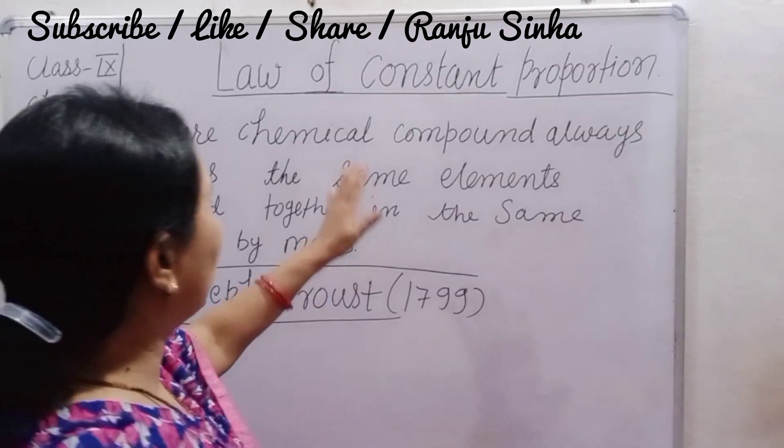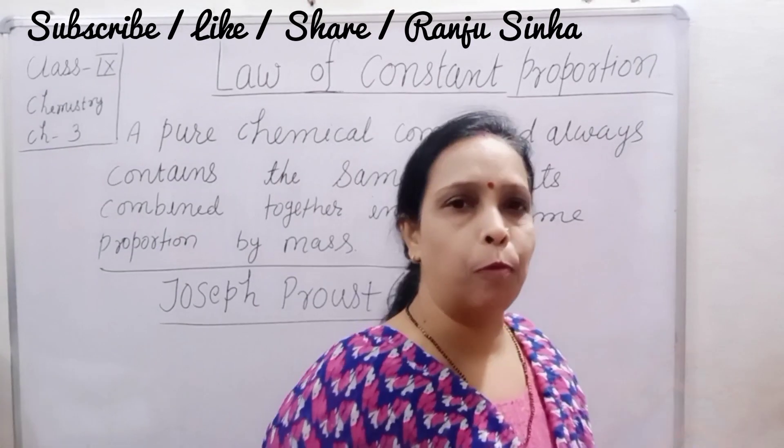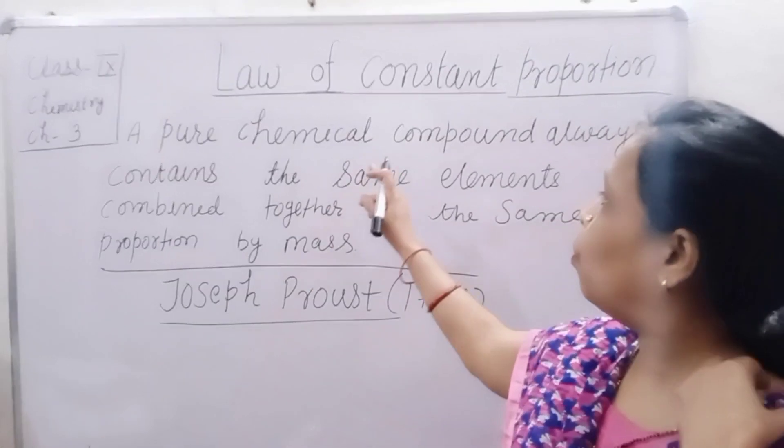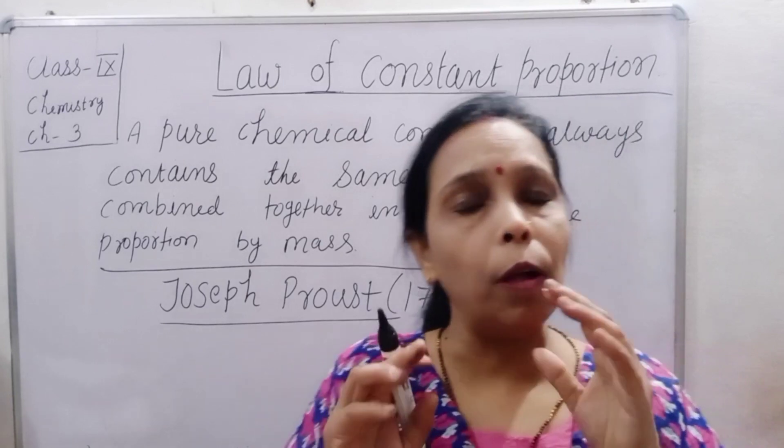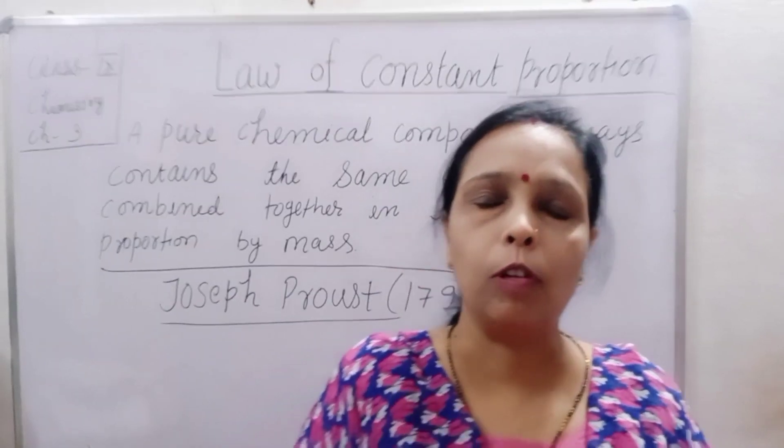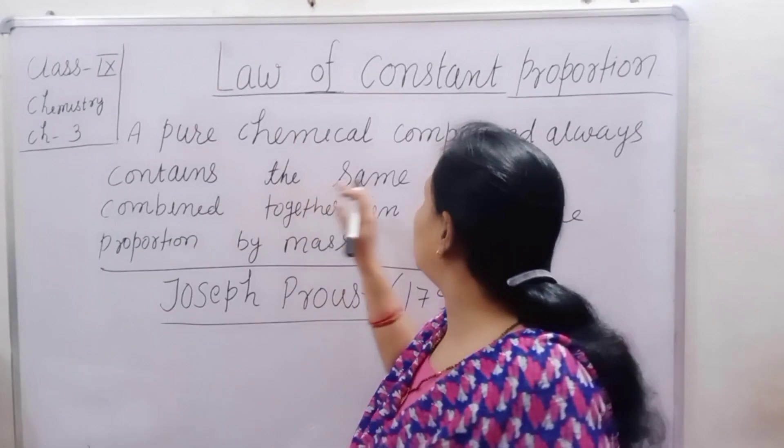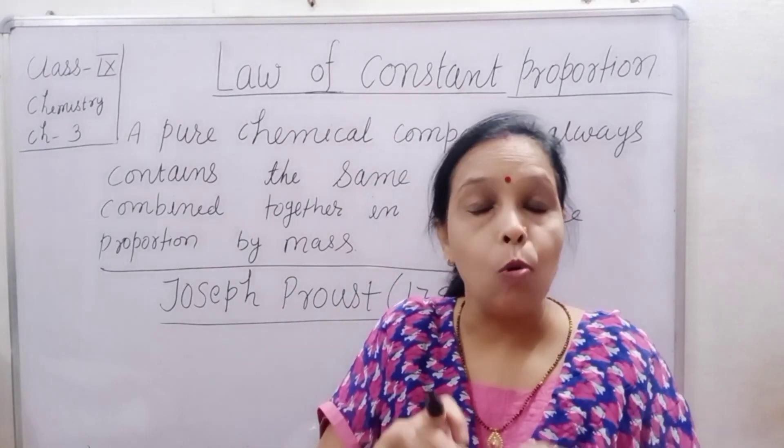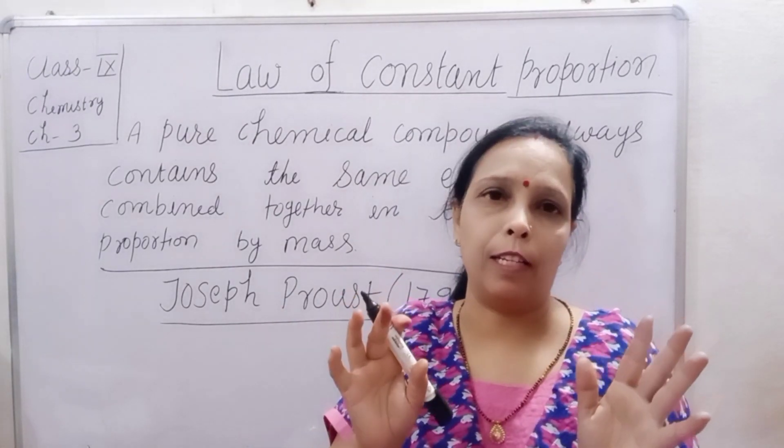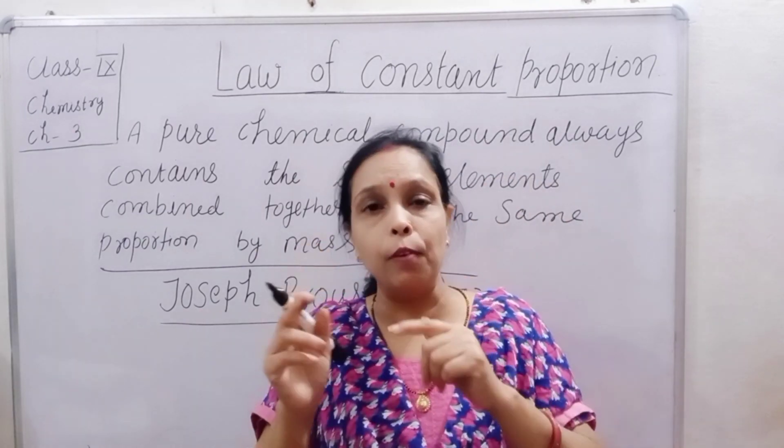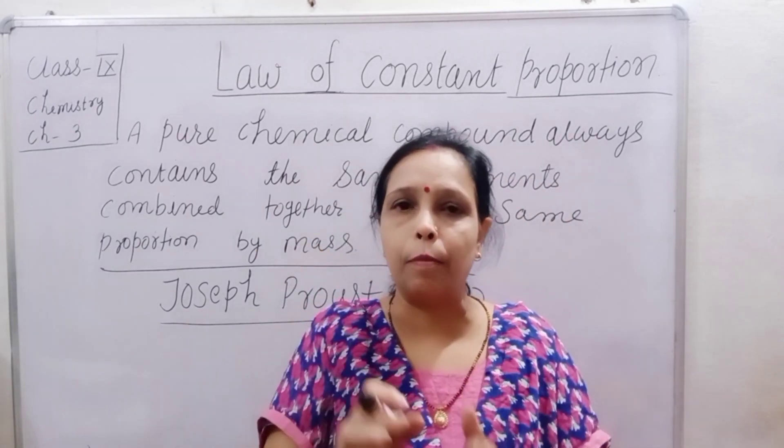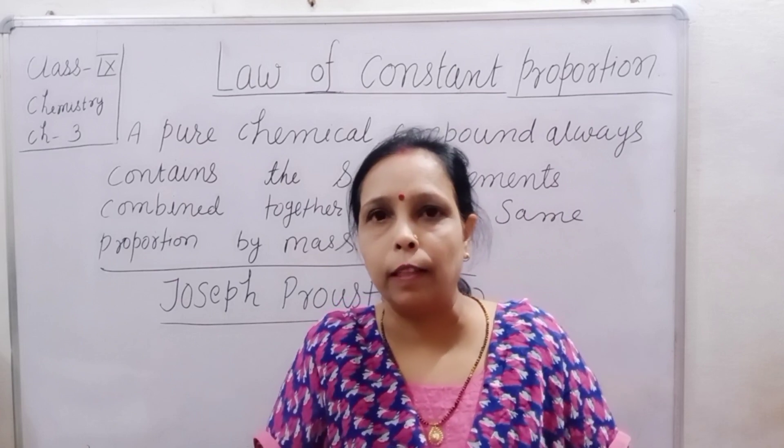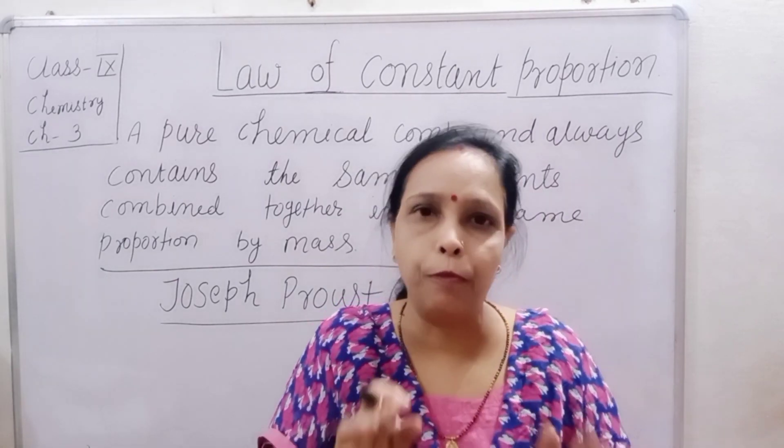According to law of constant proportion, any chemical compound which we have taken contains the same element. The compound which we have made, the element is fixed. Certain elements, this is the compound. If we combine the other element, the compound is not formed.